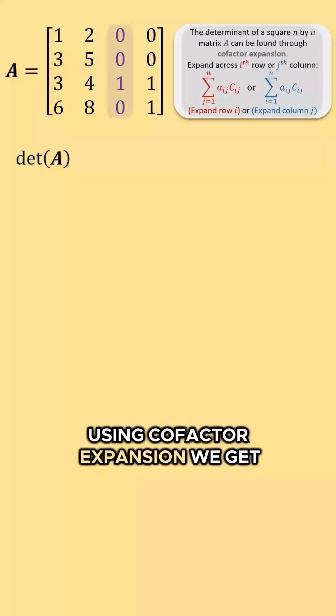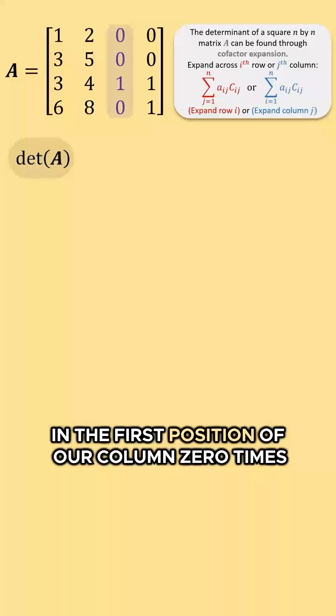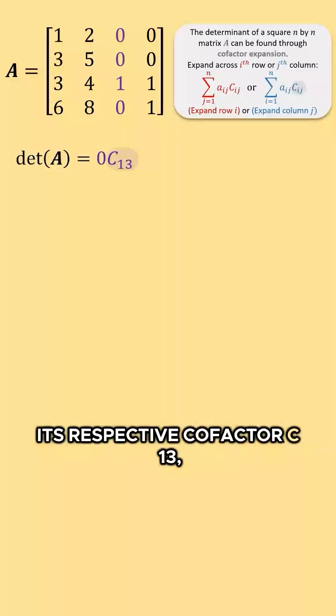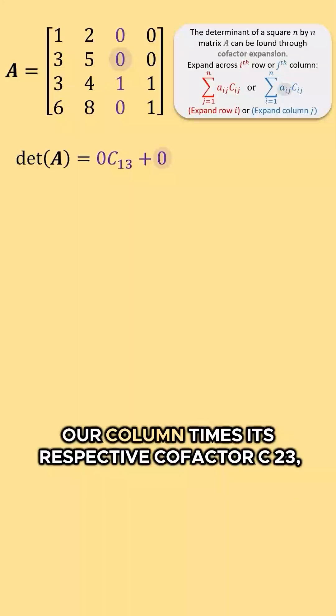Using cofactor expansion we get the determinant of A is equal to the value in the first position of our column, 0, times its respective cofactor C13, plus the value in the second position of our column times its respective cofactor C23.